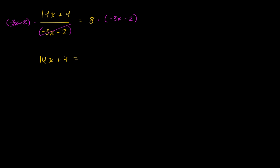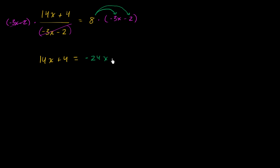And on the right-hand side, you just have to multiply 8 times (negative 3x minus 2). So you are left with 8 times negative 3x, which is negative 24x, and then 8 times negative 2 is negative 16.